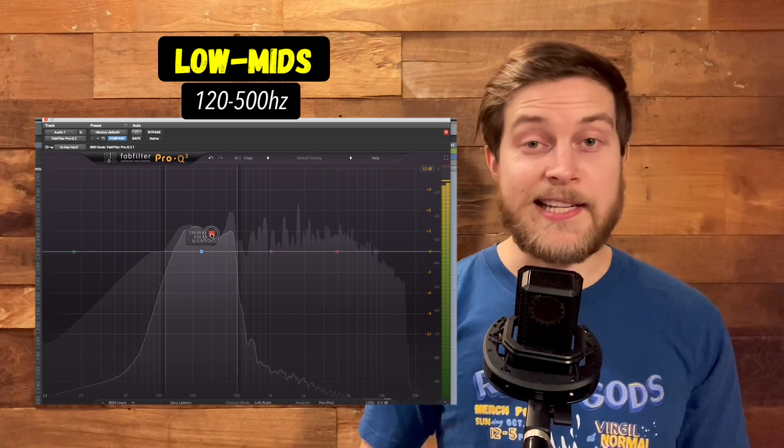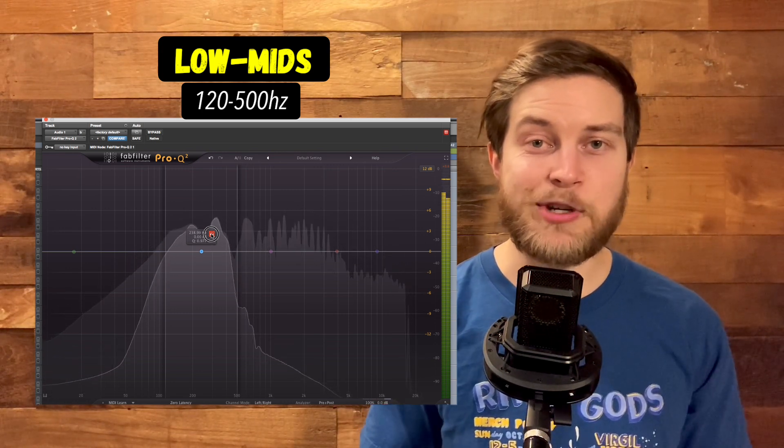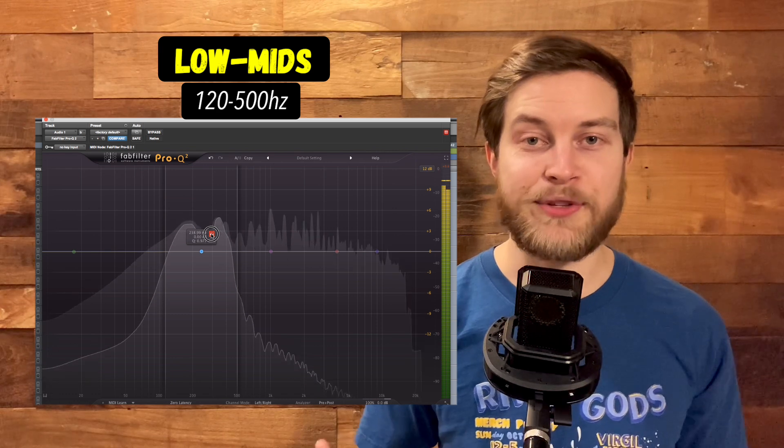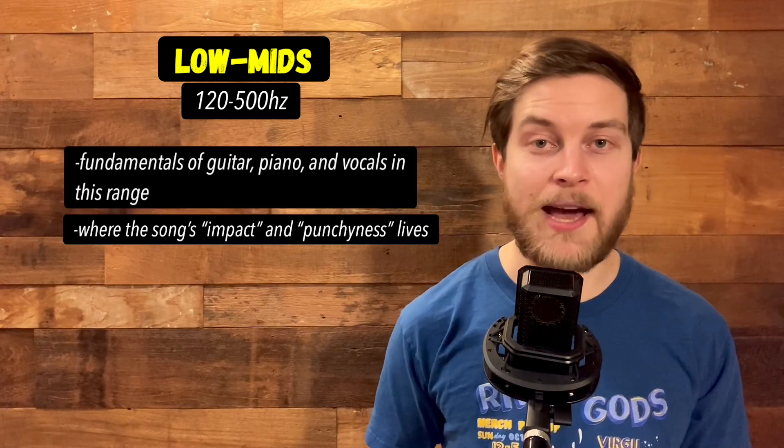Next, the low mids—the body and punch of our track. In isolation, these sound pretty gross and unflattering, but they're essential in making sure that our song feels full and impactful. You'll find the fundamentals of our guitar, piano, and vocal tracks down here. Next, the mid-range—the central element, usually containing a bit of every instrument.